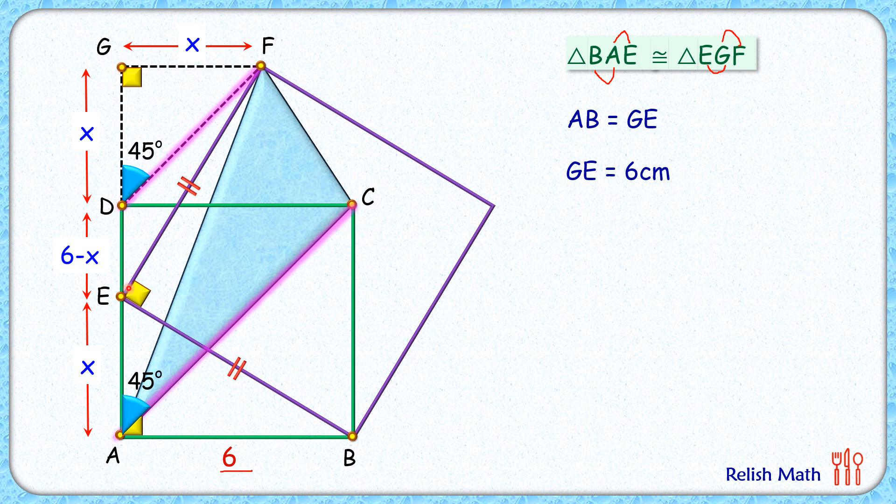Now if you look at the line segment DF and AC, with respect to them GA is a transversal, and these angles are corresponding angles. As these corresponding angles are equal, we can say that DF and AC are parallel to each other.